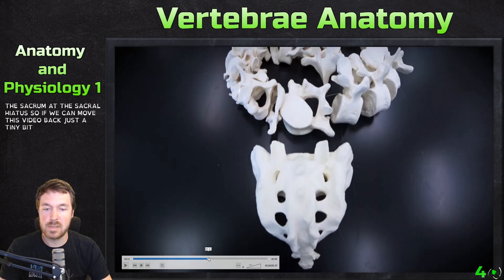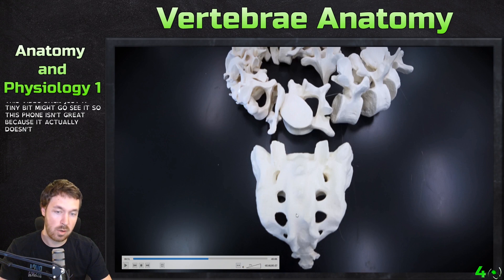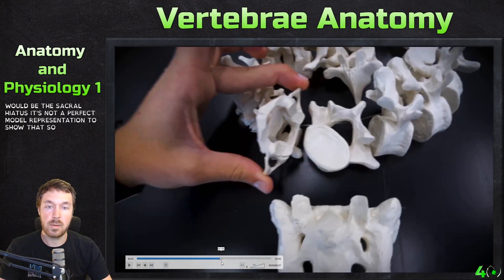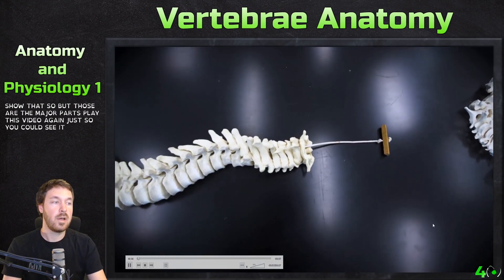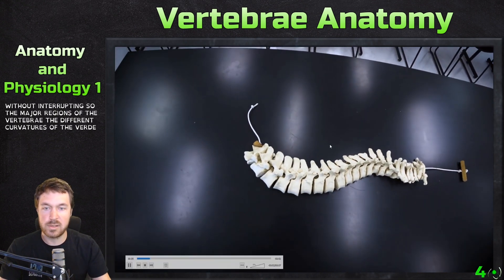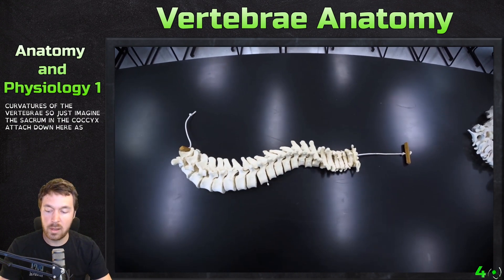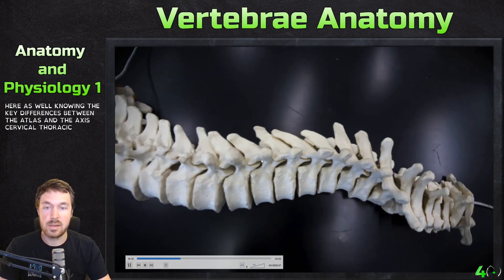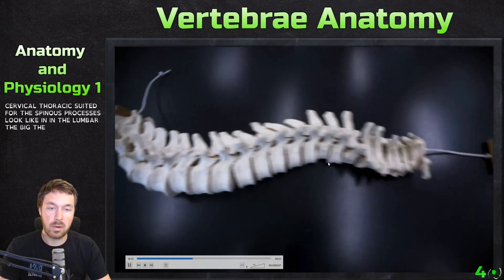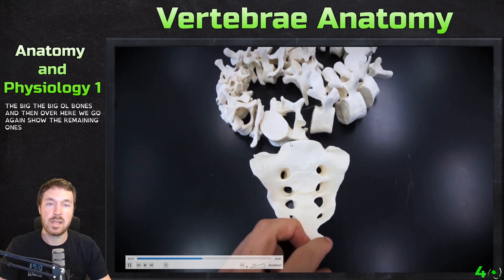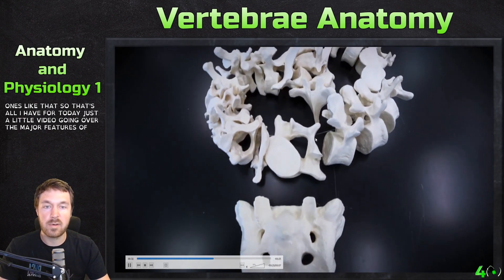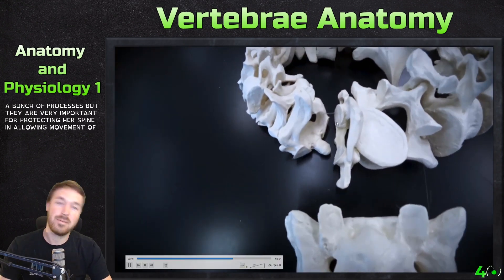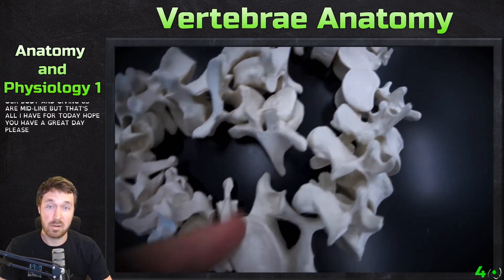This bone model doesn't perfectly show the channel going through there, but those are the major parts. So to recap: the major regions of the vertebrae, the different curvatures, the sacrum and coccyx attached down below, and knowing the key differences between the atlas, the axis, cervical, thoracic — what the spinous processes look like — and then the lumbar, the big bones. That's all I have for today — just a little video going over the major features of a vertebrae. They're very irregularly shaped bones with a bunch of processes, but they are very important for protecting our spine and allowing movement of our body. I hope you all have a great day — please let me know if you have any questions!